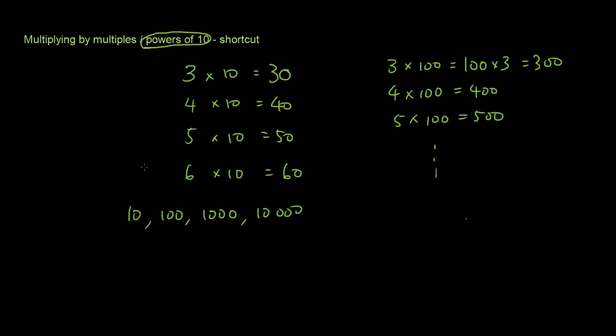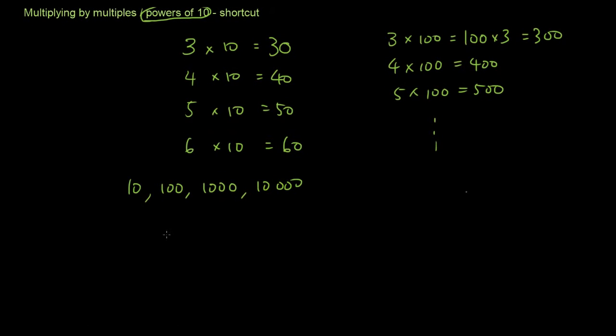So all of these numbers are powers of 10, and let's say I want to do 7 times 1000. All you have to do is you look at how many zeros there are in the number that you're multiplying by. So I can see 3 zeros. So all you have to do is write 7000. Just insert that number of zeros.